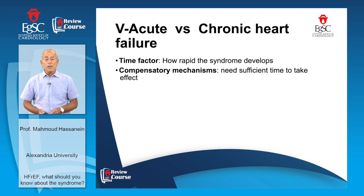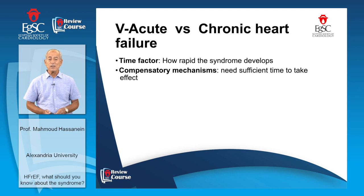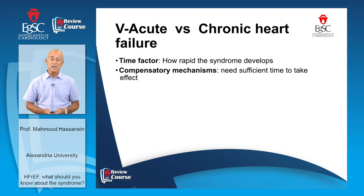The fifth phenotype is acute versus chronic heart failure. This depends on the time factor and how rapidly the syndrome develops. For example, a patient presenting with acute myocardial infarction may develop acute heart failure within a few hours, while a patient with valvular disease may take years to develop heart failure, depending on compensatory mechanisms and the time needed for these mechanisms to take effect.